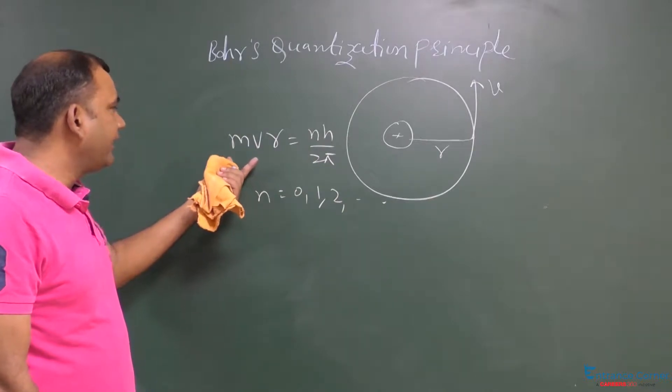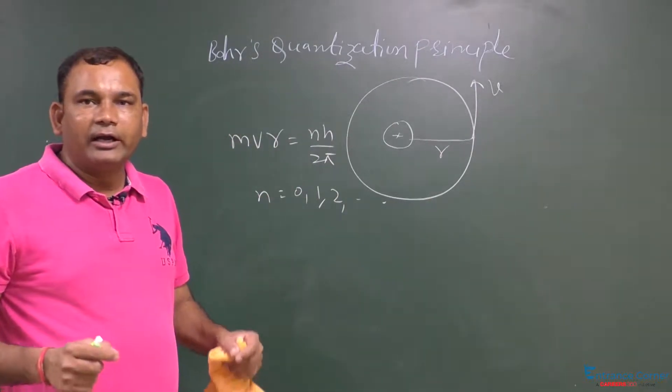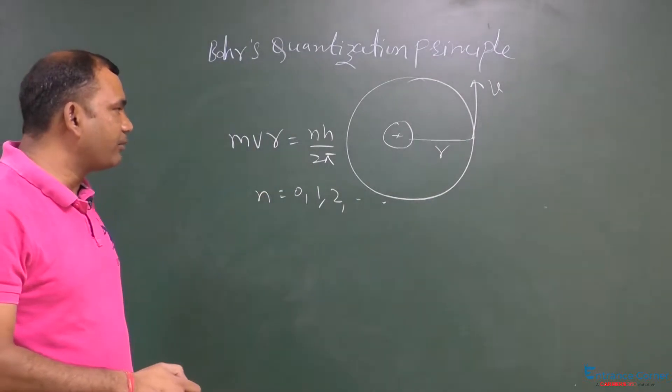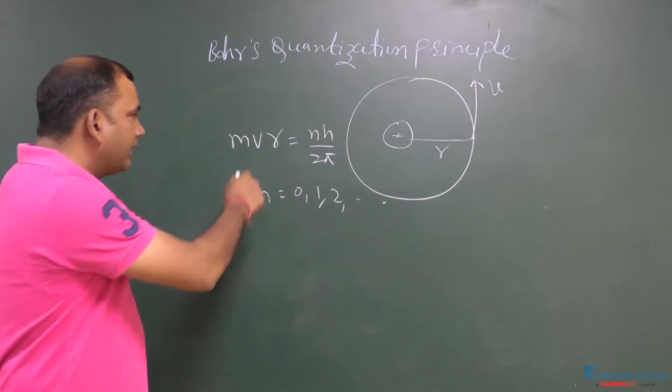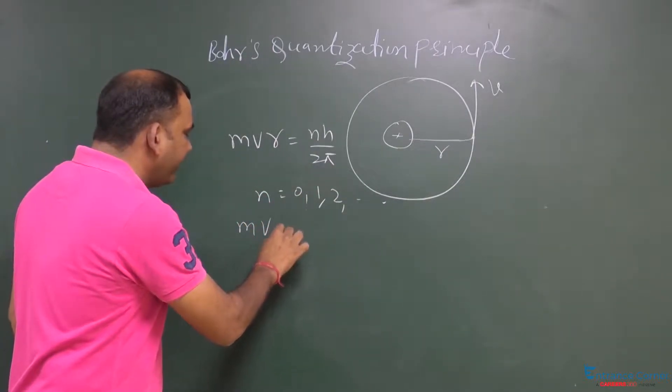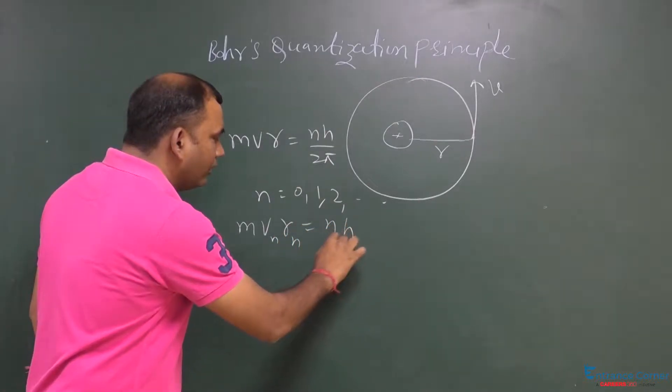That is why we say that angular momentum of the electron revolving around the nucleus is an integral multiple of h upon 2π. Now, we also write this as m v_n r_n equals n h upon 2π.